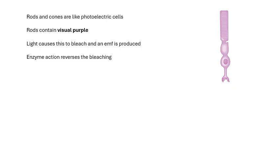Rods and cones are a bit like photoelectric cells. Light falls on them and they produce electricity, an EMF. Rods contain a chemical called visual purple. Light causes it to bleach so it loses its color, its purpleness, and in that chemical reaction it produces an EMF. Then enzymes get to work and they reverse the bleaching so that the rod is regenerated and used again.